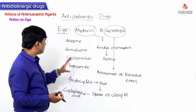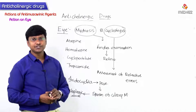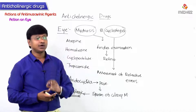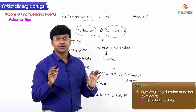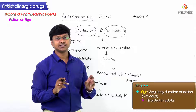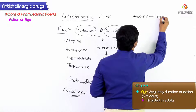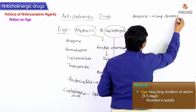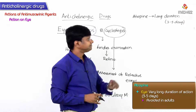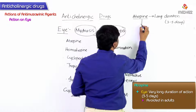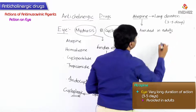The drugs causing mydriasis and cycloplegia include atropine, homatropine, cyclopentolate, and tropicamide. Atropine has a very long duration of action within the eye — nearly around 3 to 5 days. Because of this long duration of action, atropine is avoided in adults.